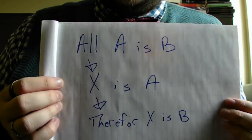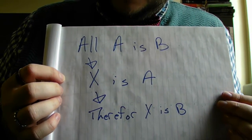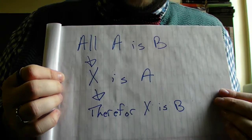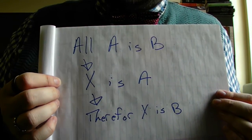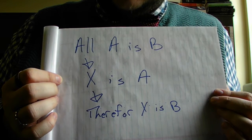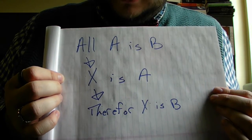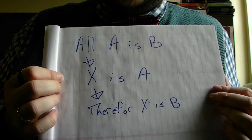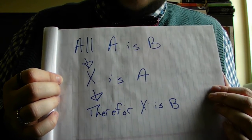One of the ways that we tend to think about syllogisms is algebraically, with sets of letters. The basic syllogism's algebraic formula would be: all A is B, X is A, therefore X is B. All things within category A are B, X is within category A, therefore X is B.